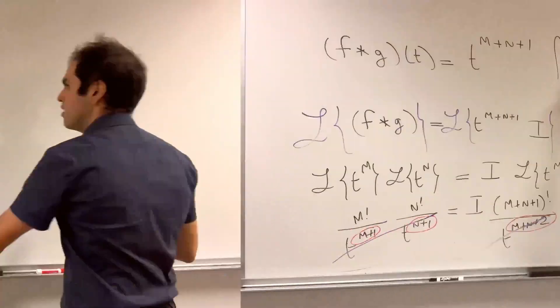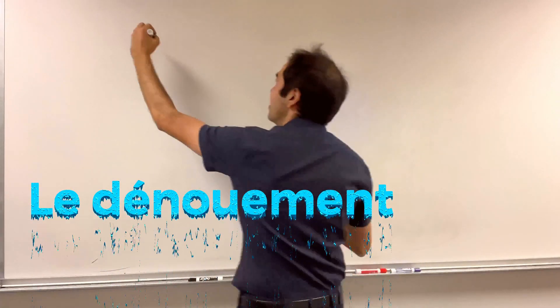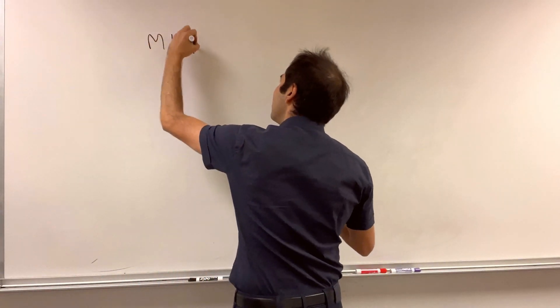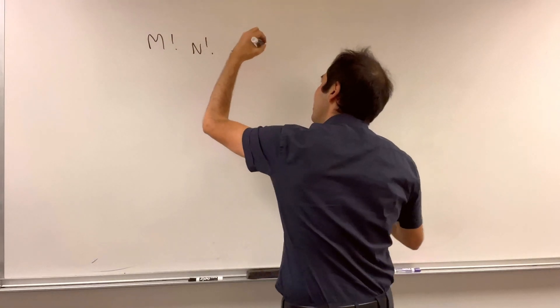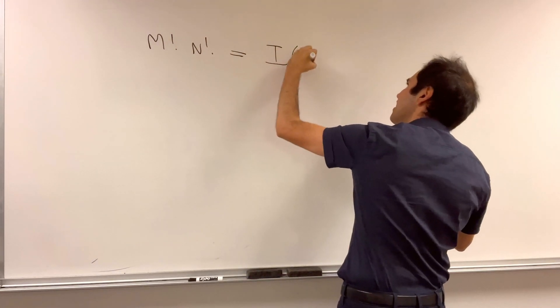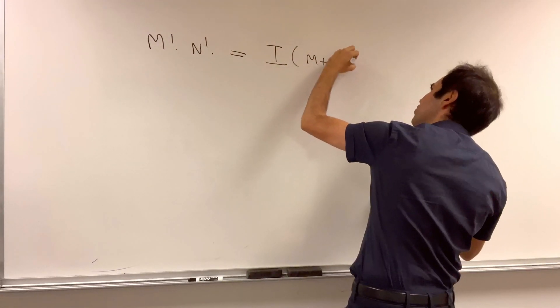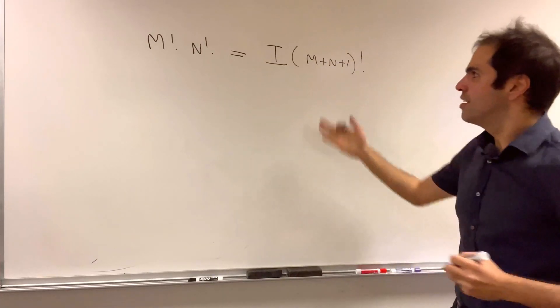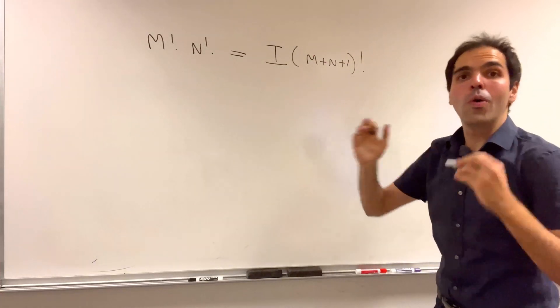and what you get then is an equation for our integral. So what we get is m factorial times n factorial equals I times m plus n plus 1 factorial.